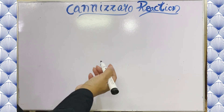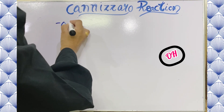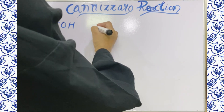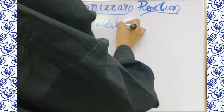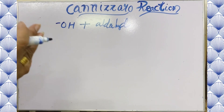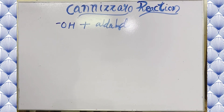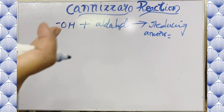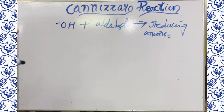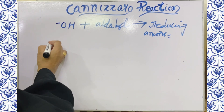The disproportionation reaction is called the Cannizzaro reaction, in which hydroxide ions react with an aldehyde, producing two reducing ions or anions. The second one of these two anions is more difficult to produce as compared to the first one. I will show you how this goes on.